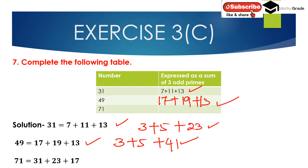For 71: 71 is the sum of 31 + 23 + 17. All three — 31, 23, and 17 — are prime numbers. Alternatively, 71 = 29 + 23 + 19, where 29, 23, and 19 are all prime numbers.